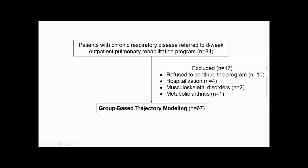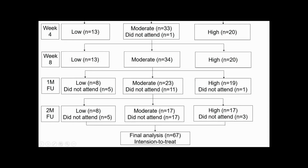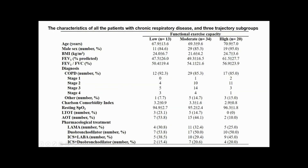The 67 completers were classified into three groups: low, moderate, and high Functional Exercise Capacity groups. The results show that compared to the high Functional Exercise Capacity group, the resting pulse oxygen saturation in the low Functional Exercise Capacity group was significantly lower. Additionally, a greater proportion of patients in the low Functional Exercise Capacity group required oxygen supplementation both at rest and during training.